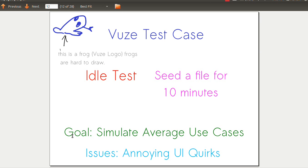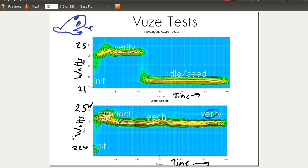Here's an example - Vuze, a BitTorrent client. We're going to set it to seed a file for 10 minutes. This is an average use case - if you want to upload something but maybe there are no uploaders, you're going to sit idle for about 10 minutes. We've got two plots here. The top one is watts versus time. At the start, we start up Vuze, it initializes, verifies you have the file, and then seeds the file. It's pretty stable during seeding.